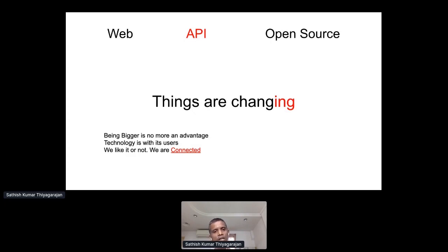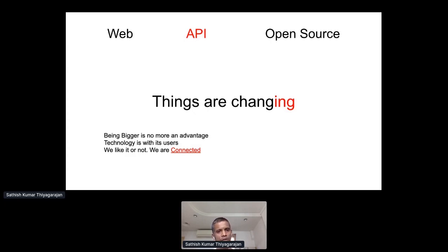We are now in the third stage where you no longer need a developer or a company — even a normal user can do what he wants. One of my friends who is a music composer wanted to open an online shop. I told him it would need four software developers. But then we came across Shopify, I helped him get started, and now the site is live — made by a music composer. That shows the kind of world we are living in.